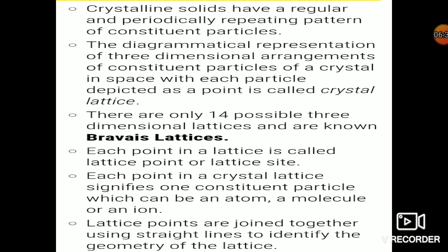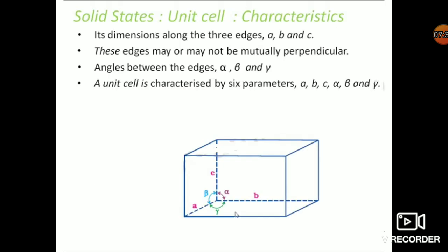Next, we'll discuss the characteristics of the crystal lattice. Crystal solids have a regular and periodic repetition pattern of constituent particles. The diagrammatic representation of the three-dimensional arrangement of constituent particles of a crystal in space, with each particle depicted as a point, is called crystal lattice. There are only 14 possible three-dimensional lattices, known as Bravais lattices. You have to remember: there are 14 Bravais lattices.